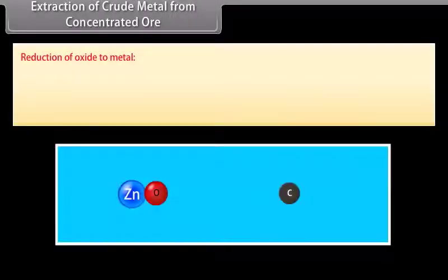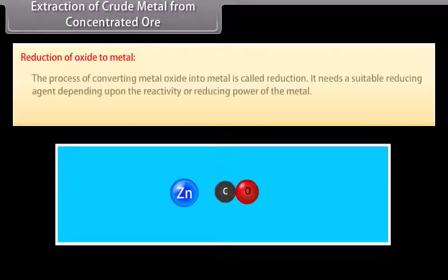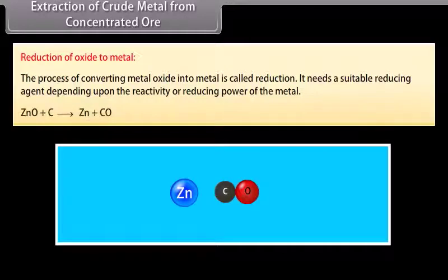Roasting is a process in which ore is heated in regular supply of air at a temperature below the melting point of the metal. Sulphide ores are converted into oxide by roasting. Reduction of oxide to metal: The process of converting metal oxide into metal is called reduction. It needs a suitable reducing agent depending upon the reactivity or reducing power of the metal. For example, carbon, carbon monoxide, aluminium and magnesium.